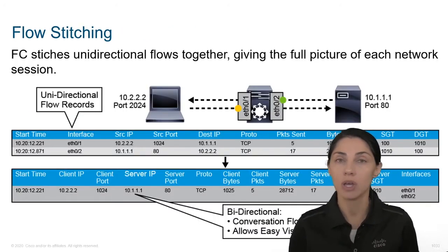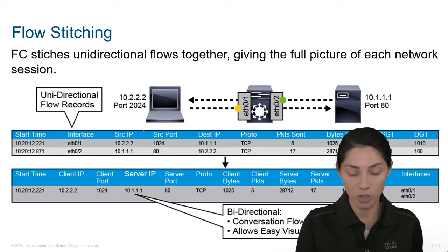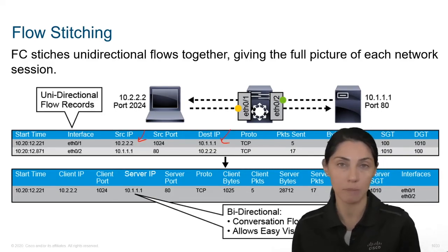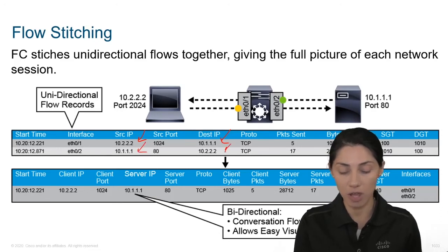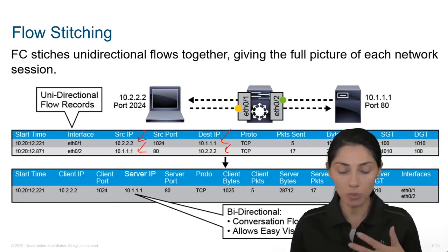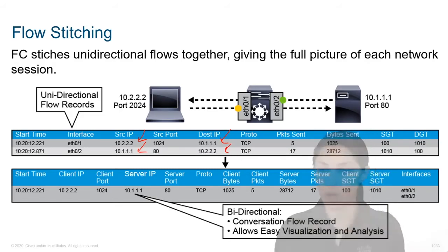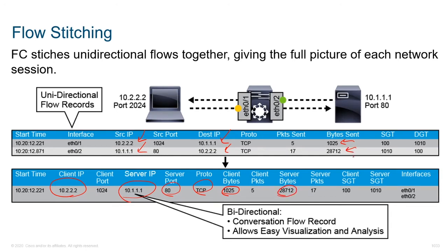We can see an example of flow stitching here in this particular slide. We're going to have traffic coming from 10.222 going to 10.111, and then the next flow is going to be that traffic coming back. When we look at these two different line items, we can stitch them together to have one single flow — showing client IPs, server IP, port, protocol, client bytes, and server bytes.